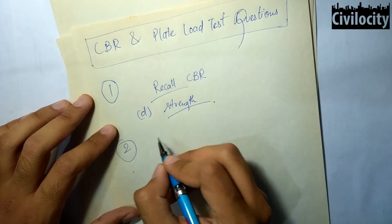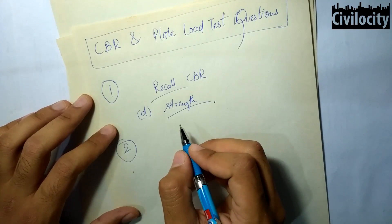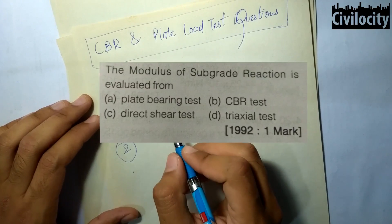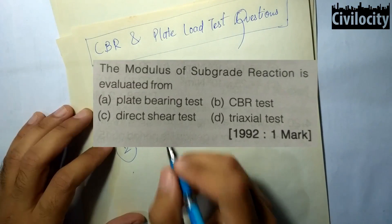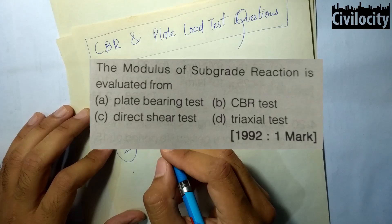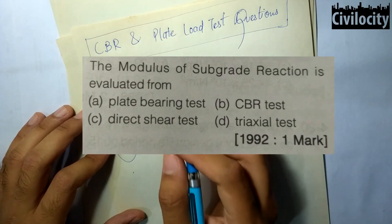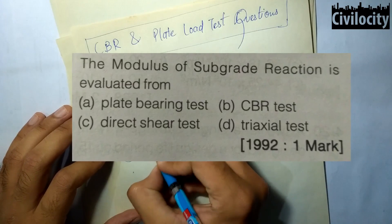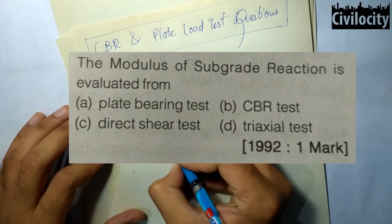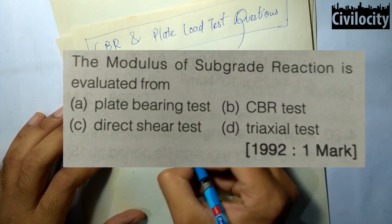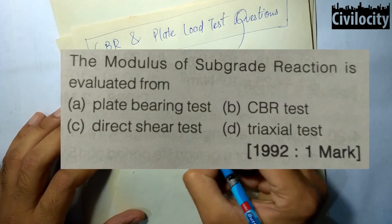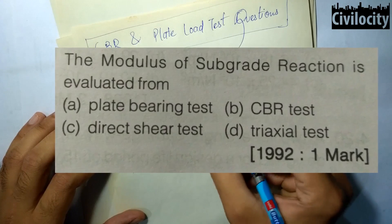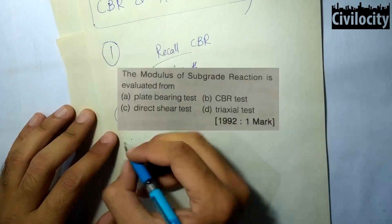The next question asks: the modulus of sub-grade reaction is evaluated from which test? The plate bearing test was originally devised to find the modulus of sub-grade reaction in Westergaard's analysis for wheel load stresses in rigid pavements. So the first option is correct: plate bearing test.